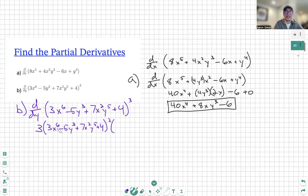3x to the sixth. Deriving that with respect to y is just a zero, because that's just a constant. Minus 5y cubed turns into negative 15y squared. Sorry, 15y squared. I lost myself here for a second. Next, our 7x squared is a coefficient. So that just comes in front.